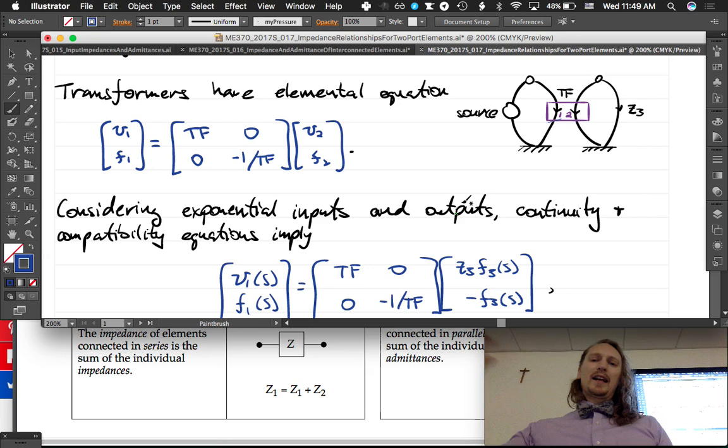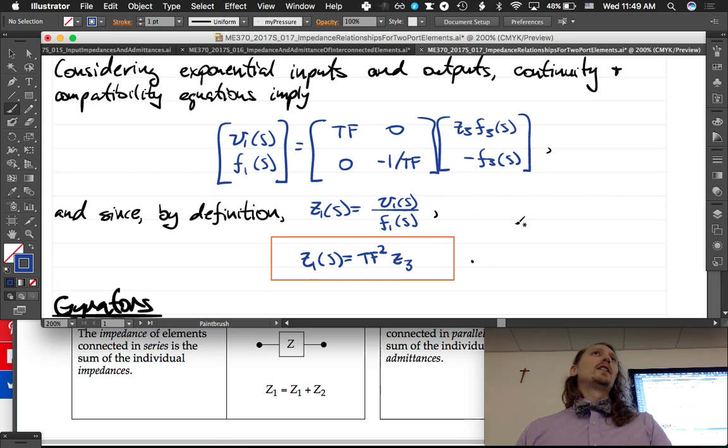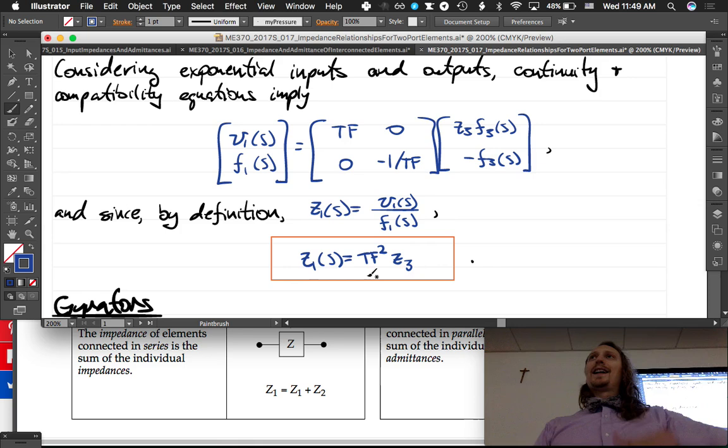I tried to give you a little bit of a motivating derivation, but I kind of went through it quickly because it's just working through the algebra. But the result is that you just square the transformer ratio and multiply it by the impedance on the other side and you get it through.